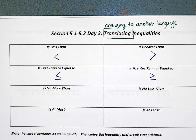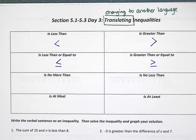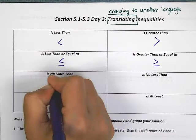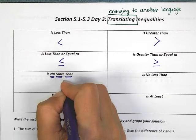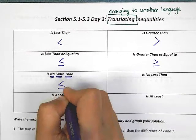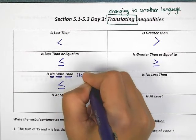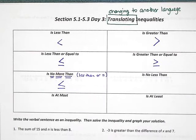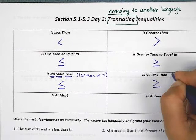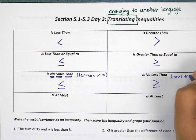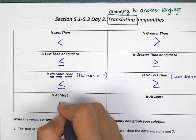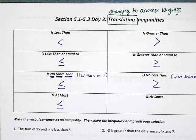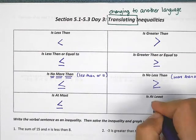Now it gets a little weird. The next part is where we've got some unusual words. 'Is no more than' — well, if I don't want to be more than, that means I want to be less than or I could also be equal to, so it means less than or equal to. 'No less than' is the opposite, so I would want to be bigger: greater than or equal to. 'At most' means less than or equal to, and 'is at least' means greater than or equal to.